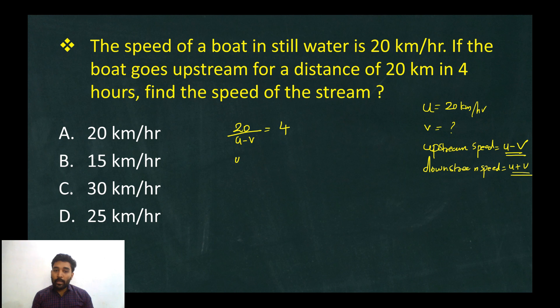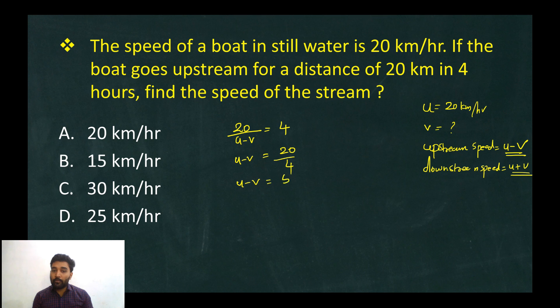Now U minus V: U minus V equals 20 divided by 4, which is 5. So U minus V is equal to 5.